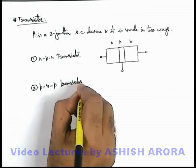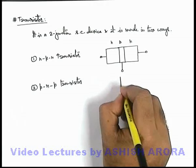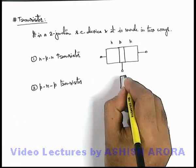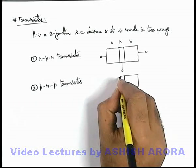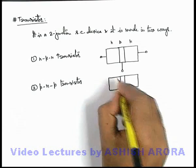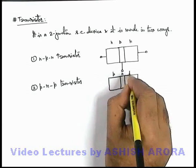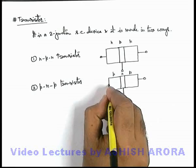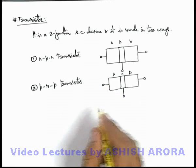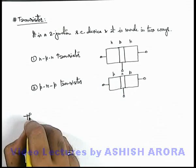In which an n-type semiconductor is sandwiched between two p-type semiconductors from two of the sides. So this will be p-n-p transistor, and again there are three terminals of the transistor.